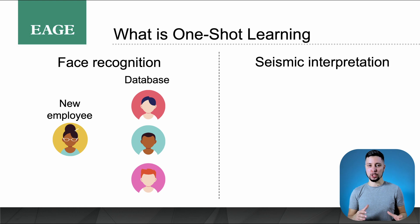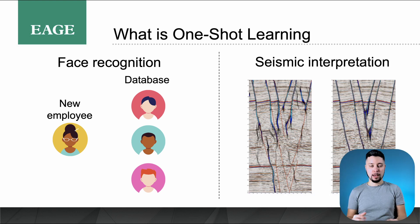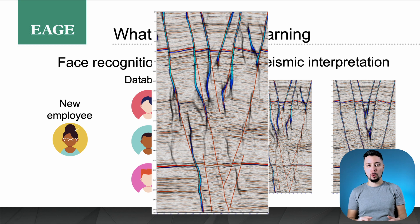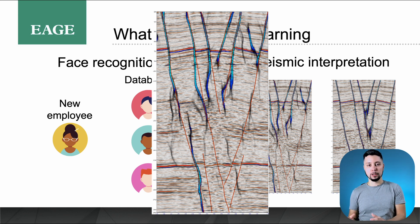One-shot learning is a computer vision problem that tries to answer the question of whether we can teach an AI a new class based on a few samples. For example, we have a survey from a geologically challenging area and we need to map all the faults. We have two choices: go with a traditional approach or use a neural network. The traditional approach has known drawbacks — it can struggle to distinguish faults where noise and stratigraphic features are present — and using a neural network will require a sufficient amount of labeled information to learn from.